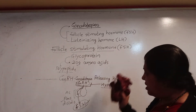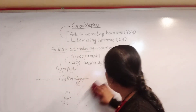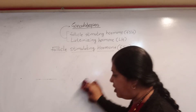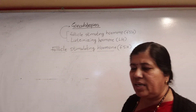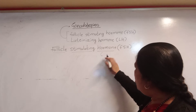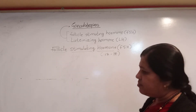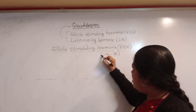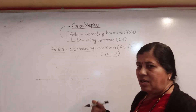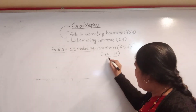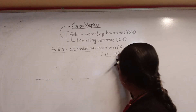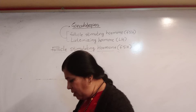Now let us discuss the function of FSH. FSH — follicle stimulating hormone — has different functions in males and females. These gonadotropin hormones are secreted starting at around the age of 12 to 14 years, meaning some years before puberty, the body begins secreting these hormones.